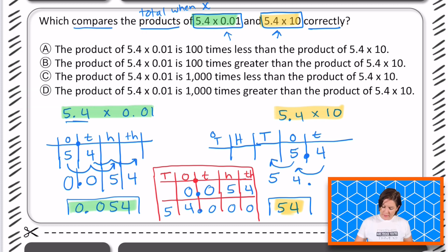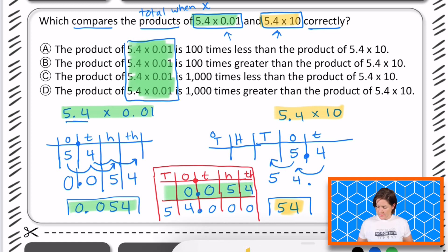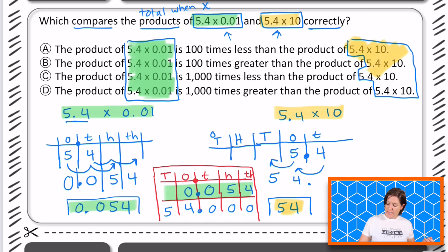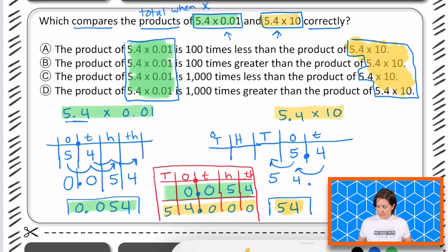So A, if I'm looking, you notice here, it says 5.4 times 0.01, right? That's our green side. That's this one. Okay. And then over here, we have these. Okay, which is all the yellow. So what we're doing is we're taking a look at the green 5.4 times 0.01 and saying how many times less than or greater than is it?